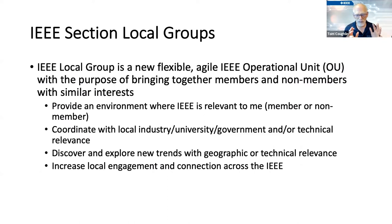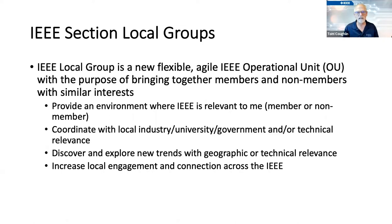Many regions and sections have their own training programs so new volunteers can learn how to do things locally. For instance, the Santa Clara Valley section, sometimes combined with Oakland East Bay and San Francisco, has held volunteer training events on an annual basis. There are some things that have come up that I think could have enormous value for sections — one is the idea of IEEE section local groups. This has been before MGA, which has approved it, and there's now some pilot work going on.